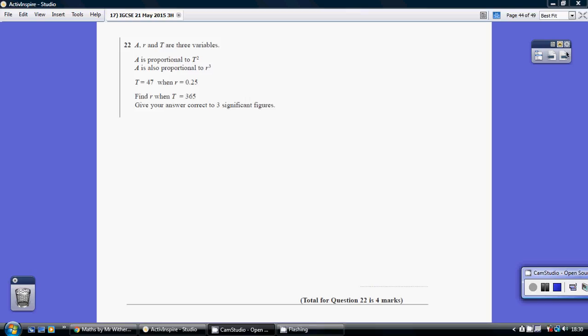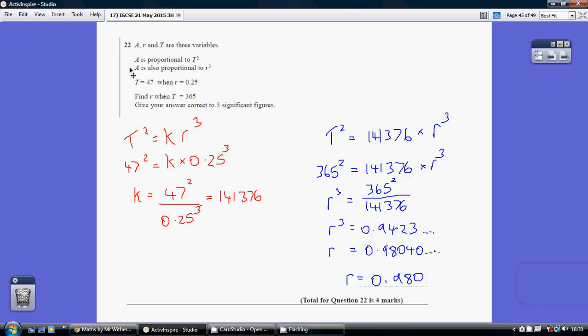Question 22. Now, we're told that both T squared and R cubed are proportional to A, so they must also be proportional to each other.